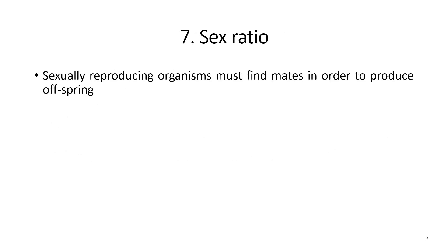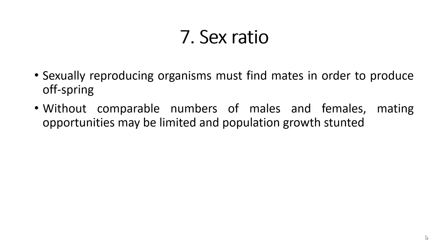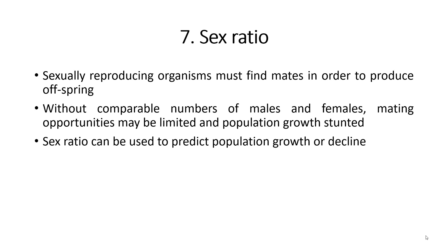Sexually reproducing organisms must find mates in order to produce offspring. Without comparable numbers of males and females, mating opportunities may be limited and population growth stunted. Sex ratio has a major implication on population dynamics. For example, stable populations may maintain a one-to-one sex ratio and therefore keep their growth rate constant, whereas an imbalance in sex ratio may lead to a drastic growth rate or death rate.